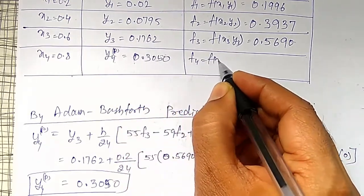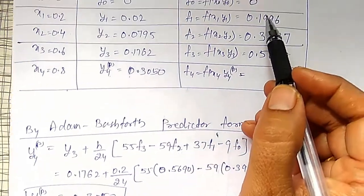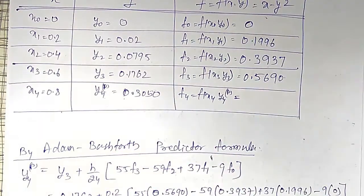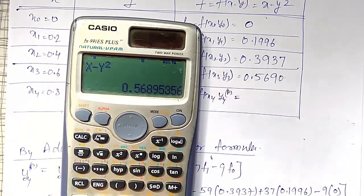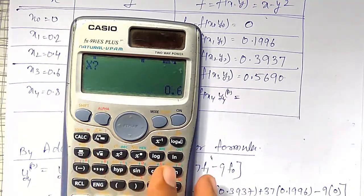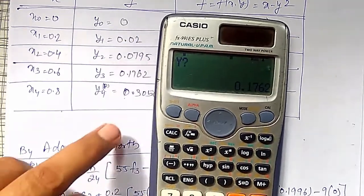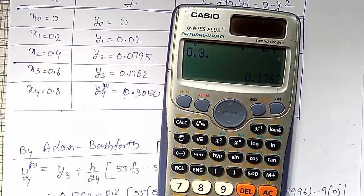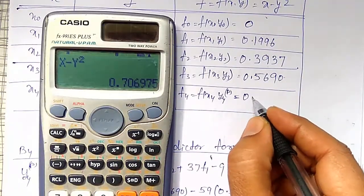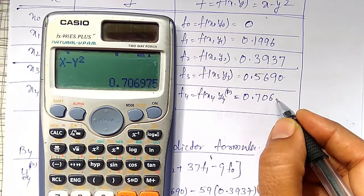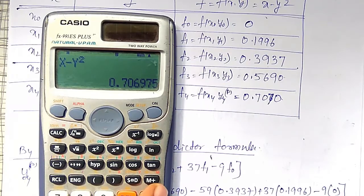Using this y4 predictor in the table, I calculate f4. f4 = f(x4, y4 predictor), that is x4 minus y4 predictor squared. Using the calculator (x minus y² is already entered), calc option asks for x: x value is 0.8, corresponding y value is 0.3050, and it comes out to be 0.7070. Up to 4 decimal place accuracy.